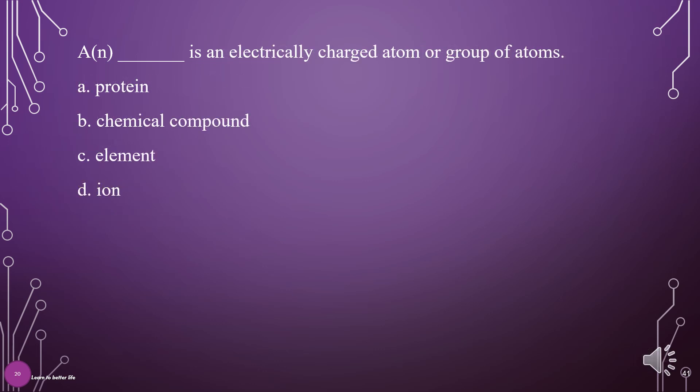What is an electrically charged atom or group of atoms? A. Protein, B. Chemical compound, C. Element, D. Ion. The answer is D: Ion.